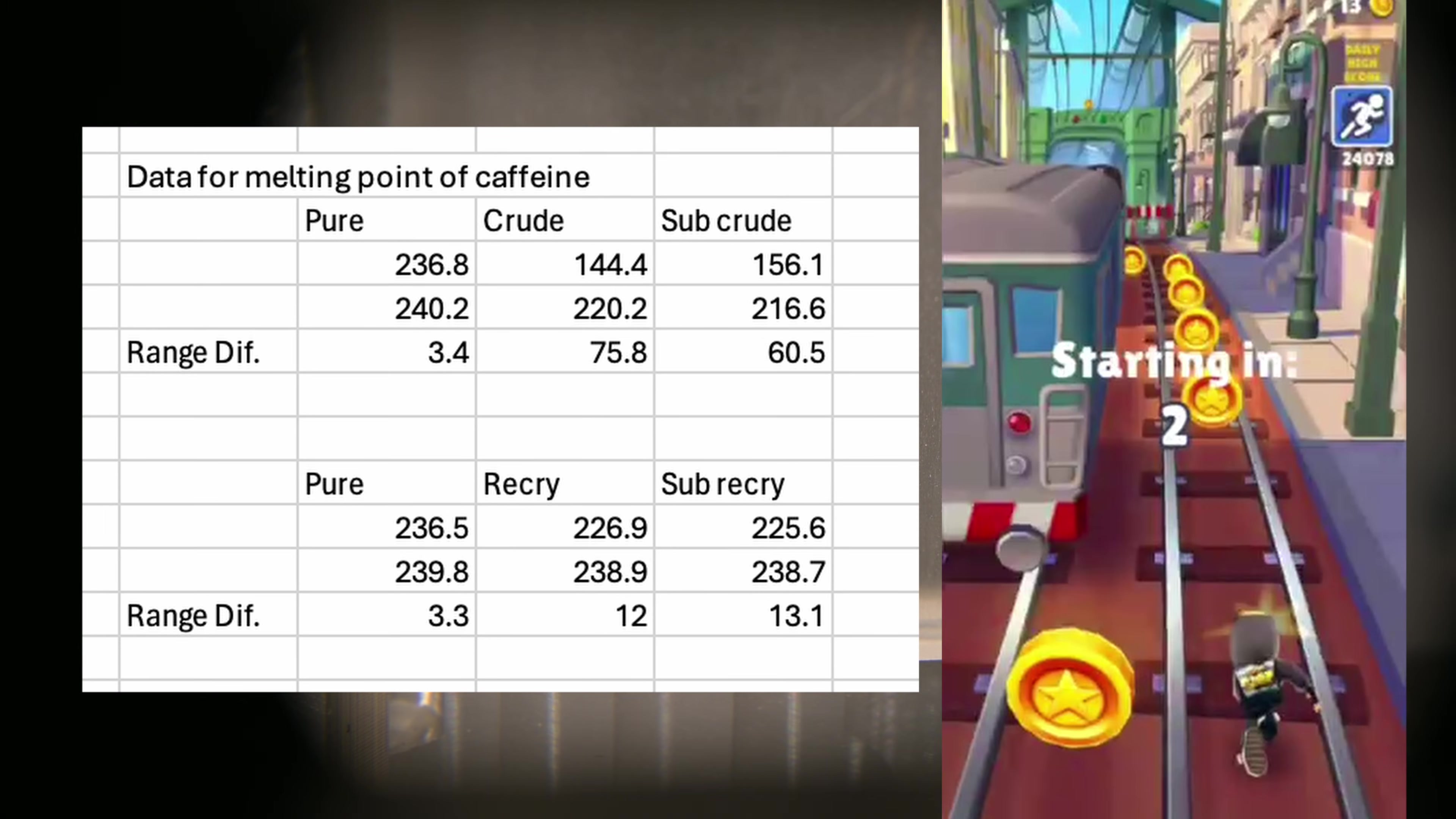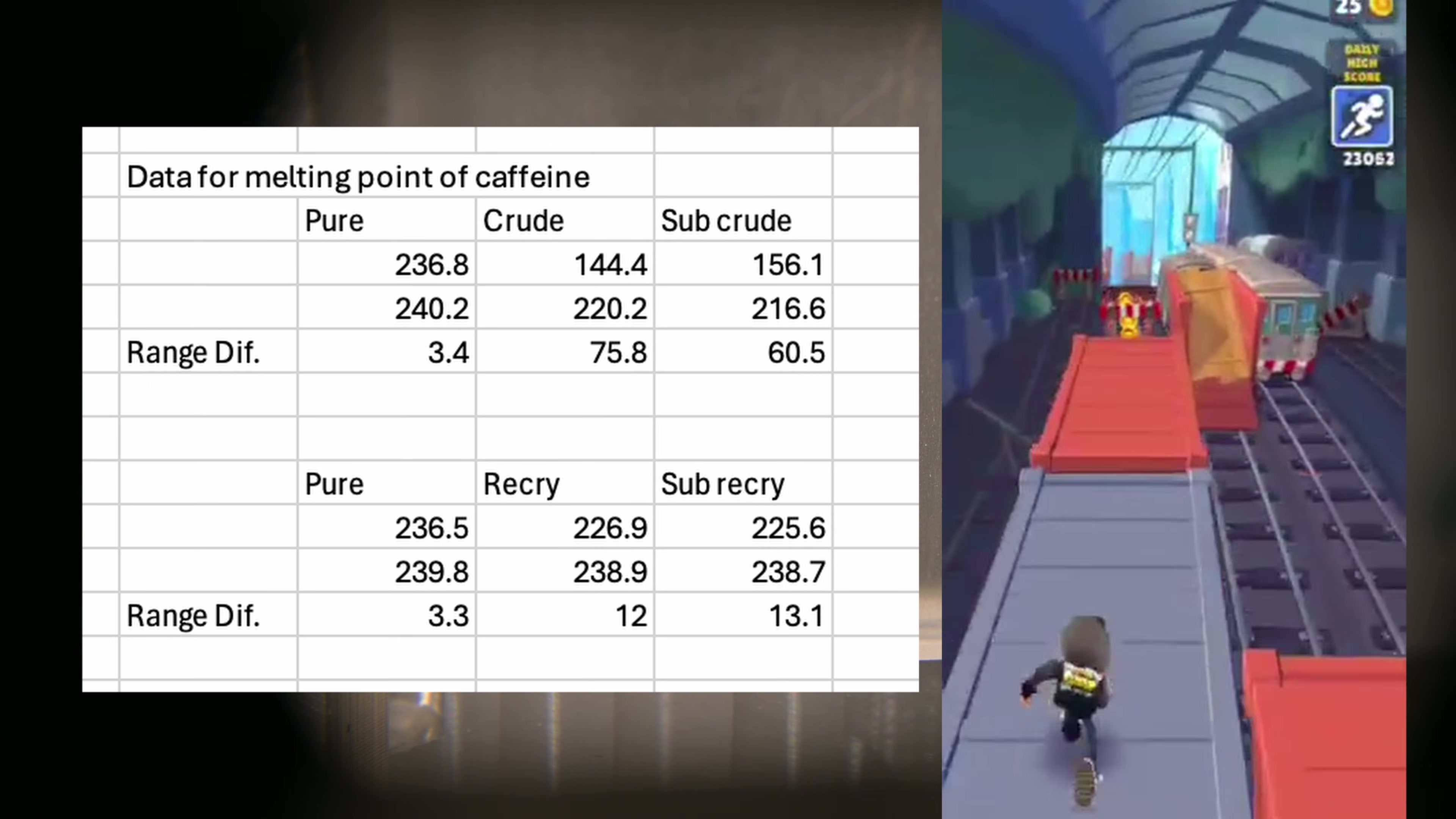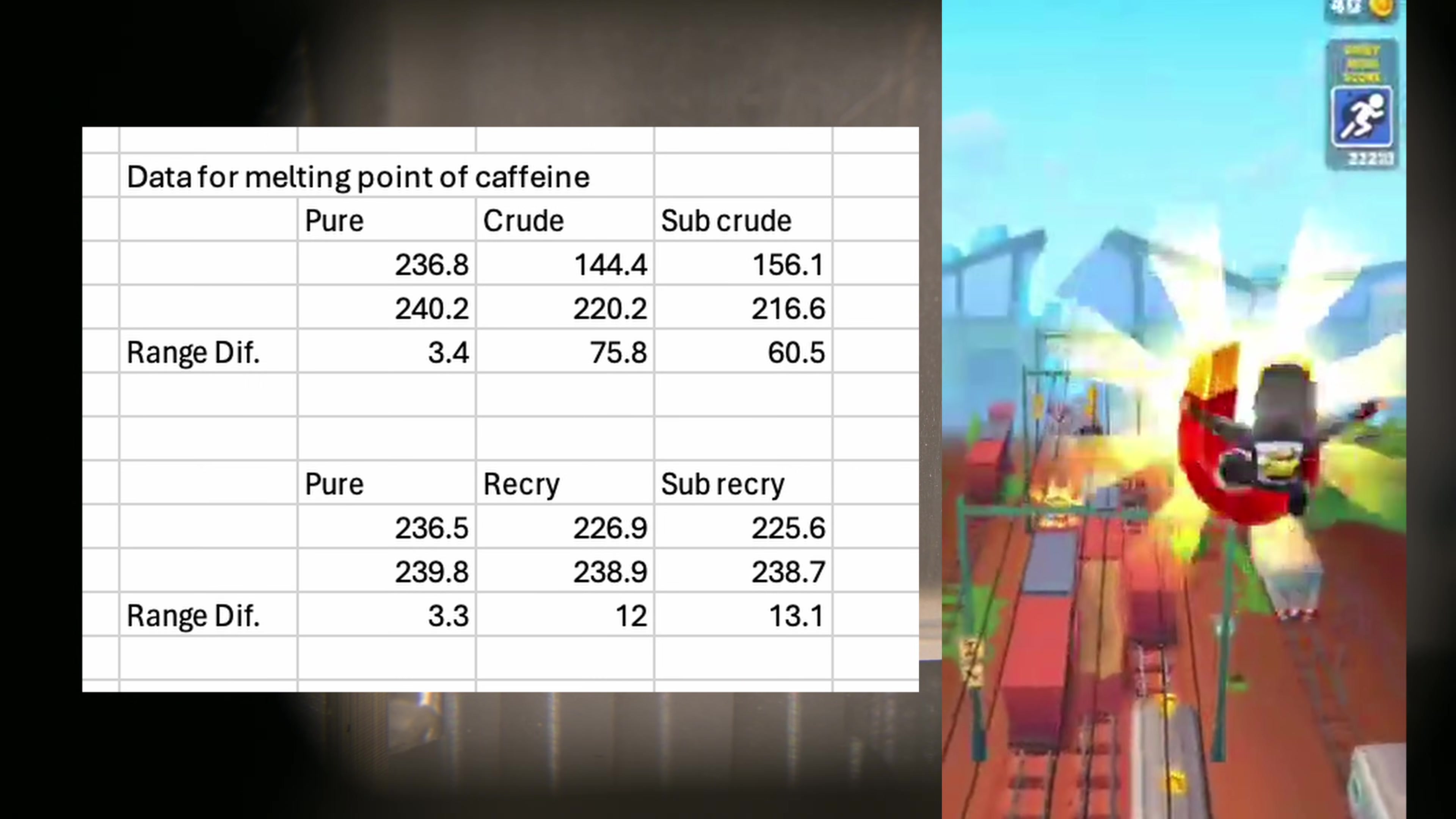First let's look at our standard caffeine, which has a melting point range of 236 degrees celsius to 240 degrees celsius, with a range about 3.3 to 3.4 celsius, which is expected for our pure caffeine, and it has a small range indicating high purity.